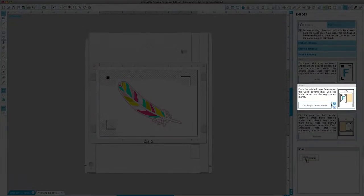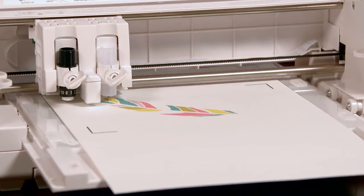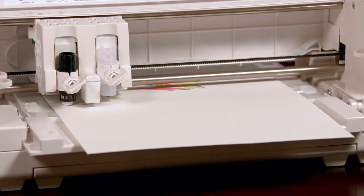Now click Cut Registration Marks and the Curio will cut out the printed black registration marks.